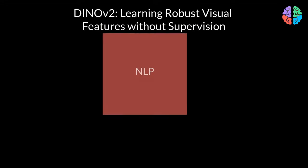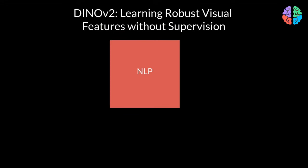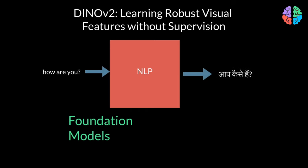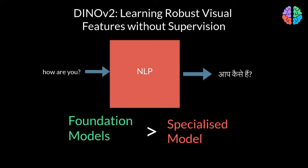If you take the field of natural language processing, the foundation models are quite advanced in that if you use the features from these foundation models for a task like translation, the model is bound to do far better than a model that's trained specifically for translation itself. This is mainly because the foundation models are trained with data at scale, harnessing all the text data on the web.